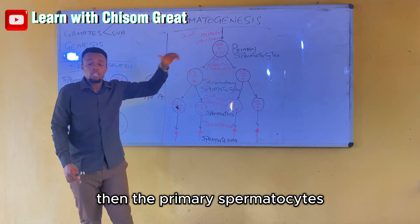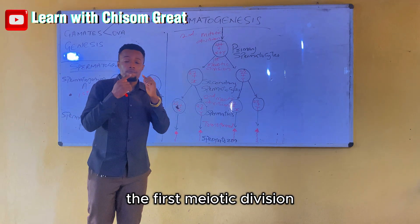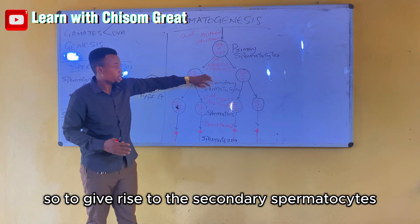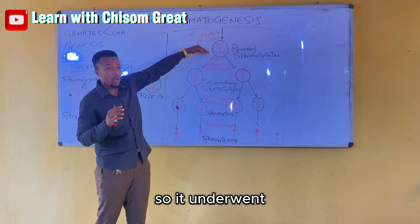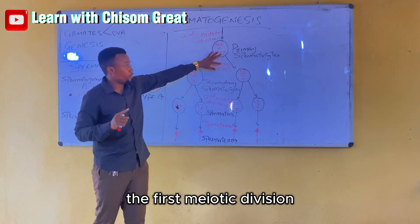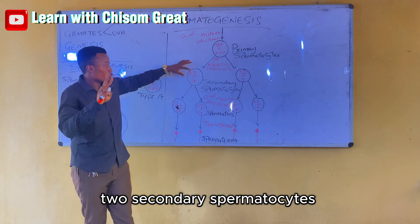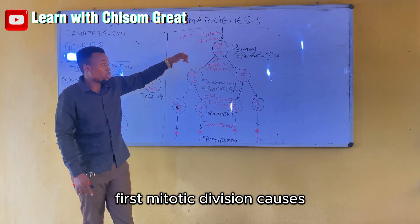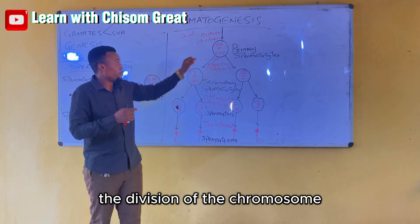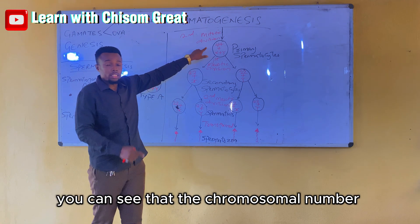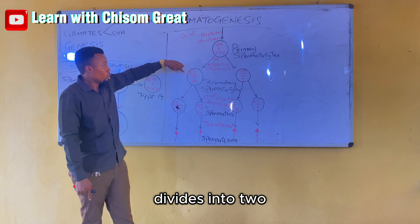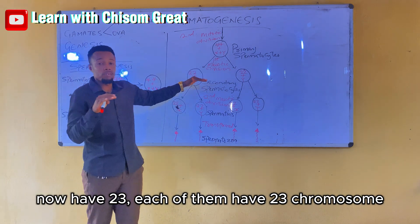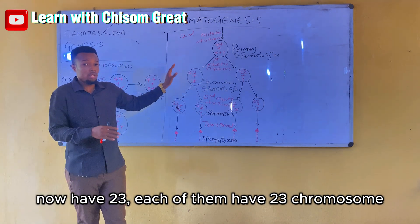The primary spermatocyte now has to undergo the first meiotic division to give rise to the secondary spermatocyte. It divides into two secondary spermatocytes. Now observe that the first meiotic division causes the division of the chromosome number — it divides into two, making it 23 chromosomes each. So the secondary spermatocytes now have 23 chromosomes each.